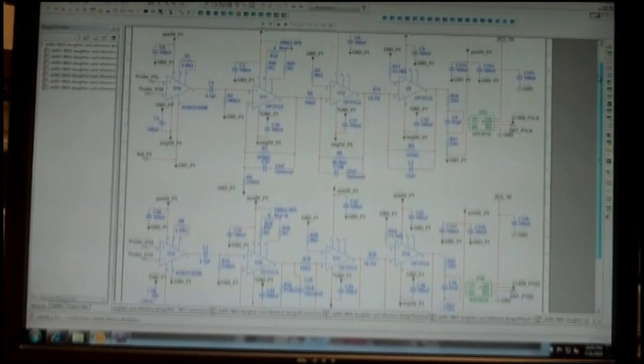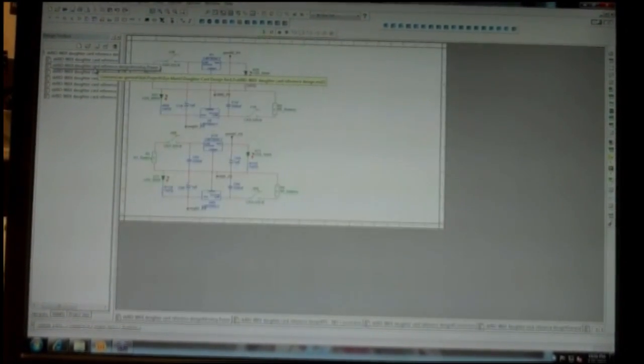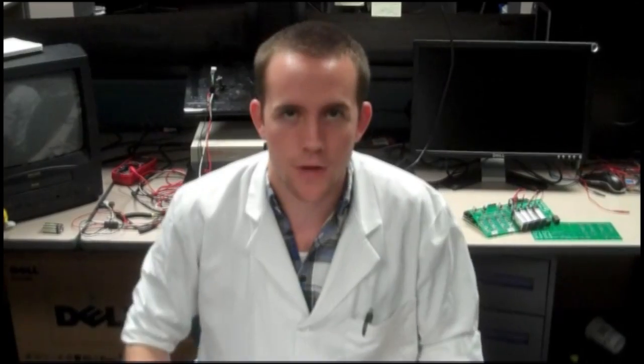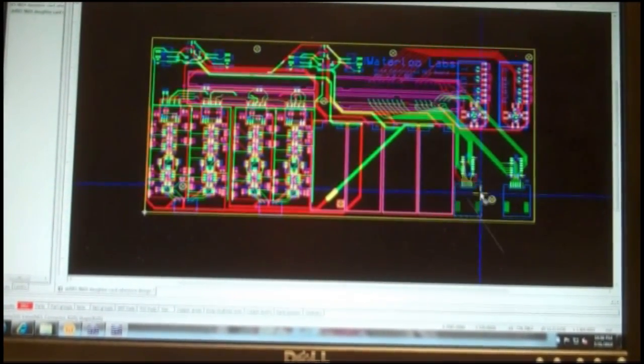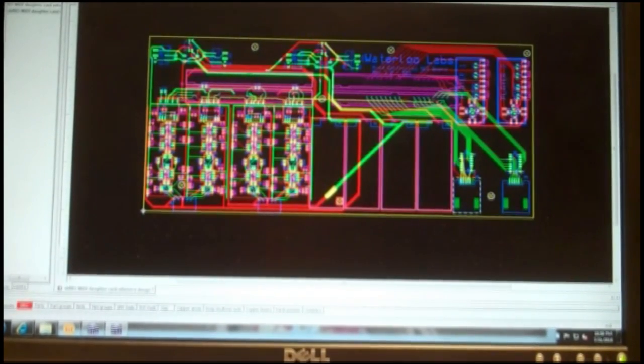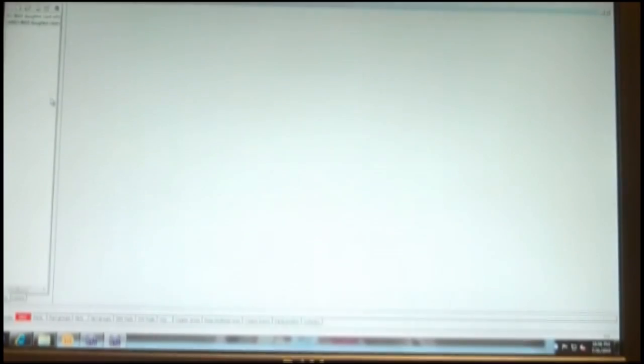I began the process by creating a schematic in NI's Multisim software. The schematic is a symbolic representation for all of the components in the circuit and how they are interconnected. Once the schematic was complete, I transferred that information over to another piece of software called Ultiboard to lay out the physical components on the board. I started with the reference design for a single board RIO daughter card, and then positioned the parts where I wanted them and drew routes for all the wires to connect those parts.